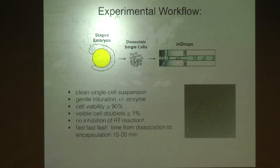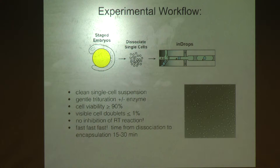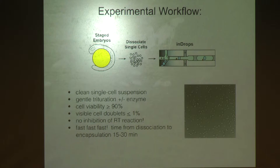Probably the biggest lesson I learned when putting this together is the importance of speed. Initially I was using FACS to help clean up single-cell suspensions. FACS is great — you can filter out dead cells, get rid of debris — but in my hands it was adding too much time to the protocol. In the end, what produced better data was eliminating FACS altogether, making the dissociation as fast and clean as possible such that I can dissociate an embryo and within 20 to 30 minutes be on the device. Speed, if you're not going to fix your cells, is probably the most important variable to optimize.